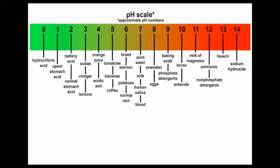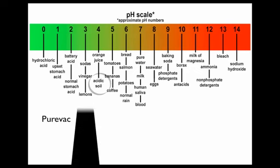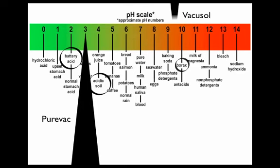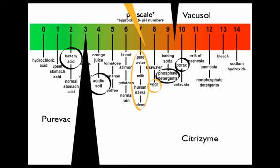Let's take a look at the pH scale and use some common type products to get a better idea of where these products fit on that pH scale. PureVac at 3 sits somewhere between battery acid and acidic soil. VacuSalt sits at 9.5, so somewhere between phosphate detergents and borax. While Citrizyme sits at 7.4, between pure water and eggs.